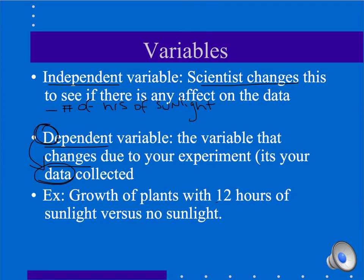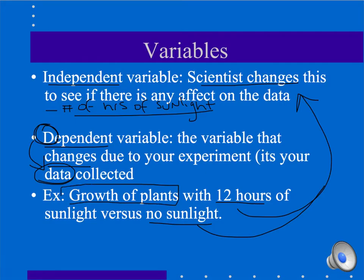So, if I grow plants with 12 hours of sunlight or no sunlight, what am I changing? Well, my independent variable is either 12 hours of sunlight or no sunlight, so the amount of sunlight, the number of hours of sunlight. My dependent variable is what I'm recording, the data I'm collecting, which is the growth of the plants.